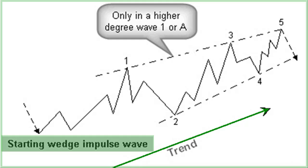Wave 1 is an impulse wave or a lower order starting wedge impulse wave. Wave 2 is a correction pattern smaller than wave 1. Wave 3 is an impulse pattern and is never the smallest wave. Wave 4 can be any correction pattern. Waves 4 and 2 may be overlapping. Wave 5 is an impulse pattern or an ending wedge impulse wave.